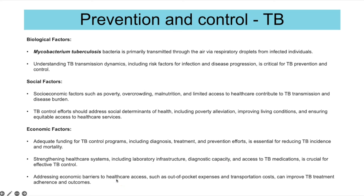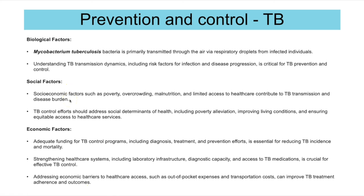Regarding biological factors, Mycobacterium tuberculosis is primarily transmitted through air droplets. Understanding TB transmission helps reduce risk, through simple measures such as coughing into your hands, washing your hands, and quarantining infected people. Socioeconomic factors such as poverty, overcrowding, malnutrition — which weakens the immune system — and limited access to healthcare can contribute to transmission. TB control efforts should address these social factors, such as alleviating poverty and providing free vaccines.